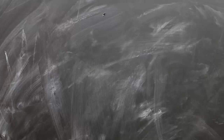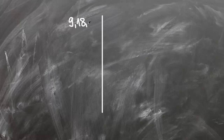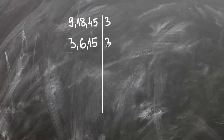Now let's find greatest common factor for 3 numbers: 9, 18 and 45. First we can see that 9, 18 and 45 can be divided by 3, which gives us 3, 6 and 15. Then 3, 6 and 15 can be divided by 3, which equals 1, 2 and 5. 1, 2 and 5 don't have common factors except 1, therefore greatest common factor is equal to 3 squared, which is 9.